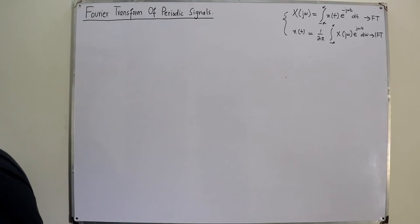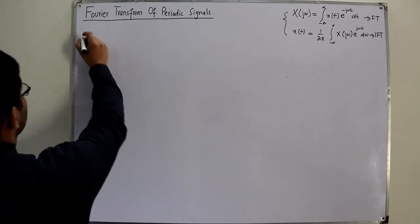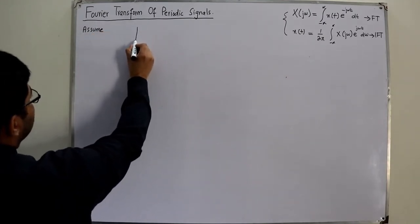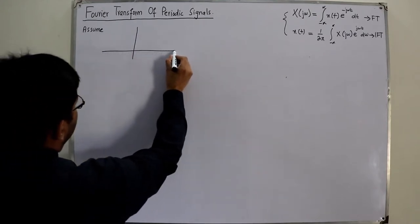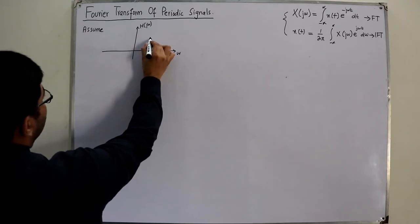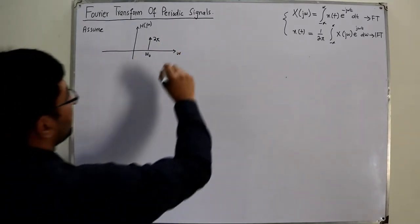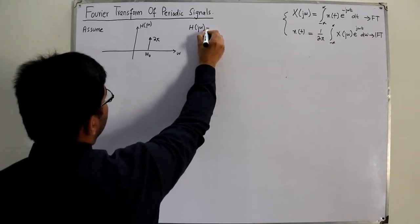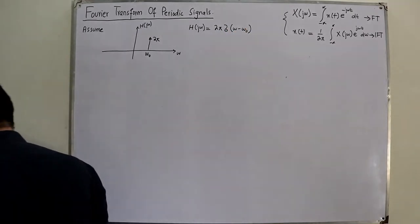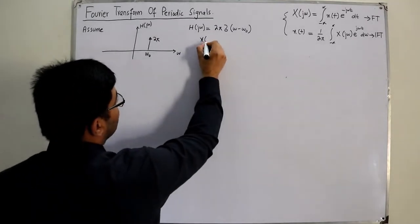Let's start by making an assumption. Consider a Fourier transform H(jω) that is an impulse located at ω₀ with weight 2π. So we can write mathematically that H(jω) = 2π δ(ω − ω₀). Given this Fourier transform, we need to find the corresponding time domain signal x(t), which is unknown.